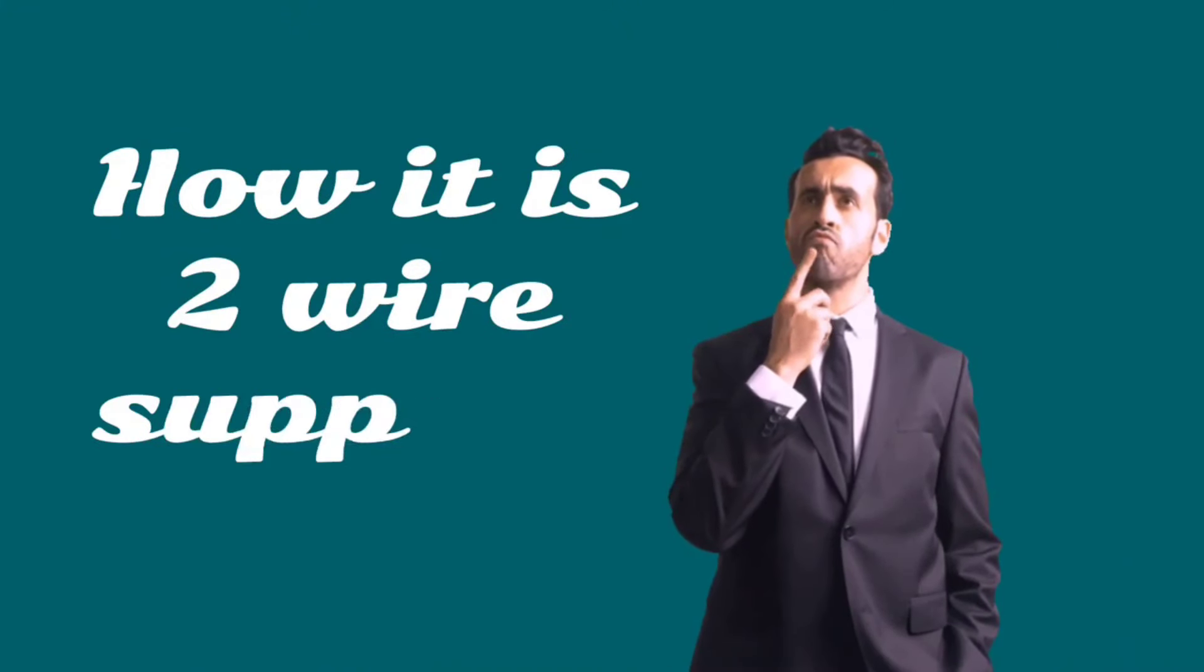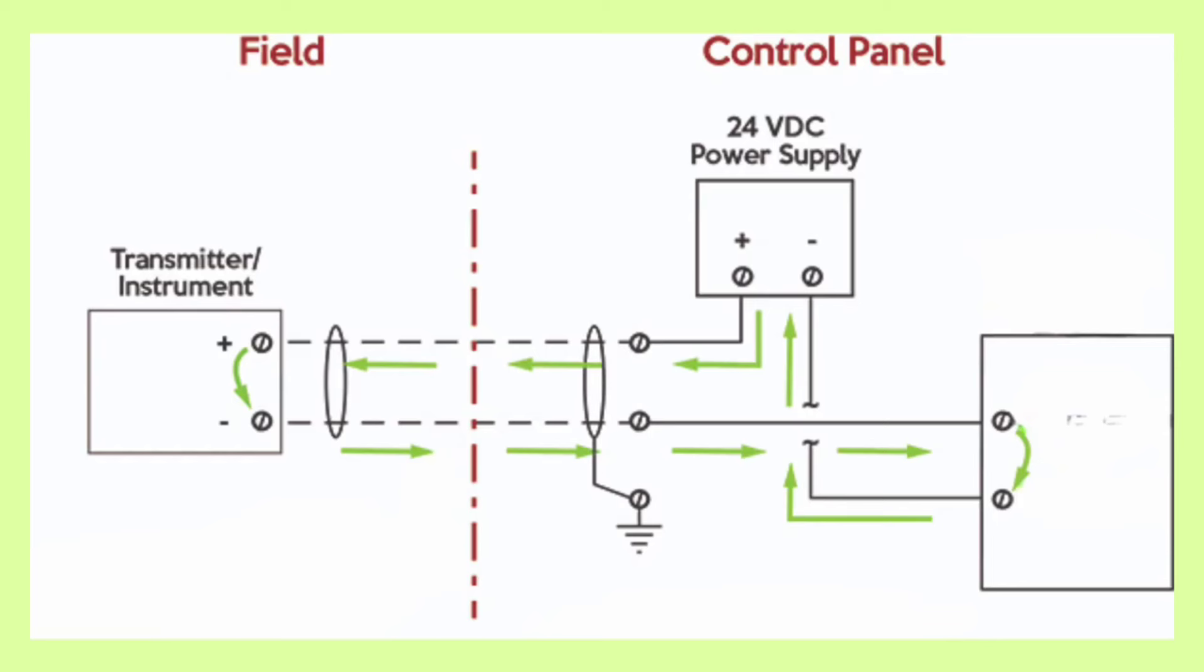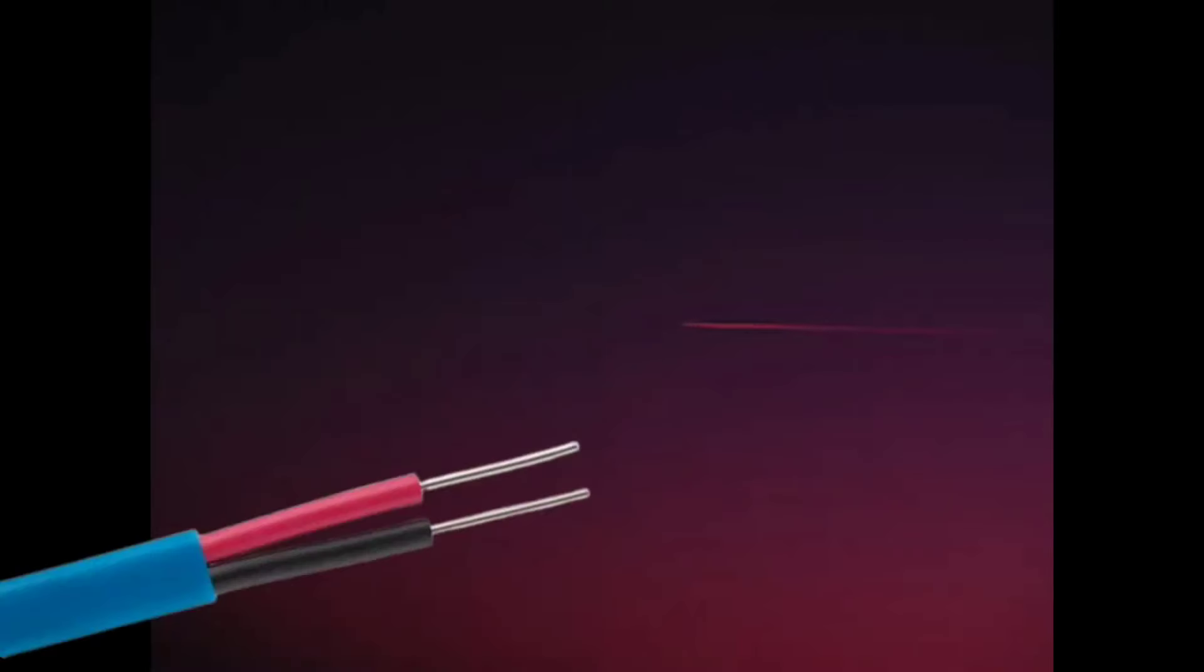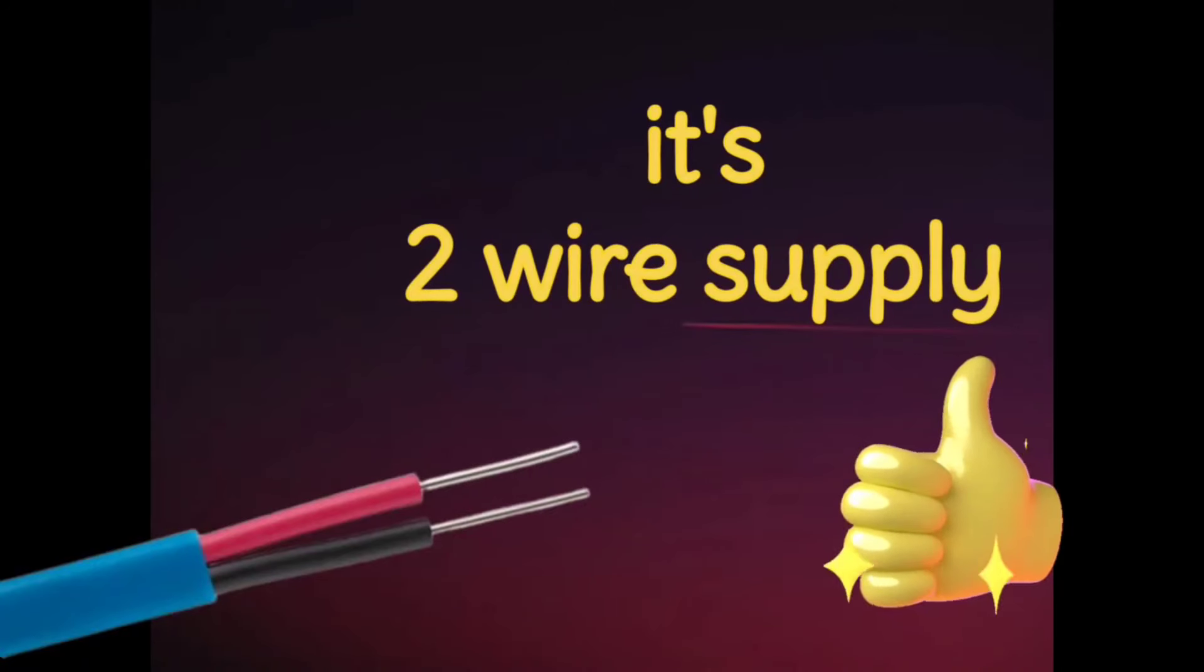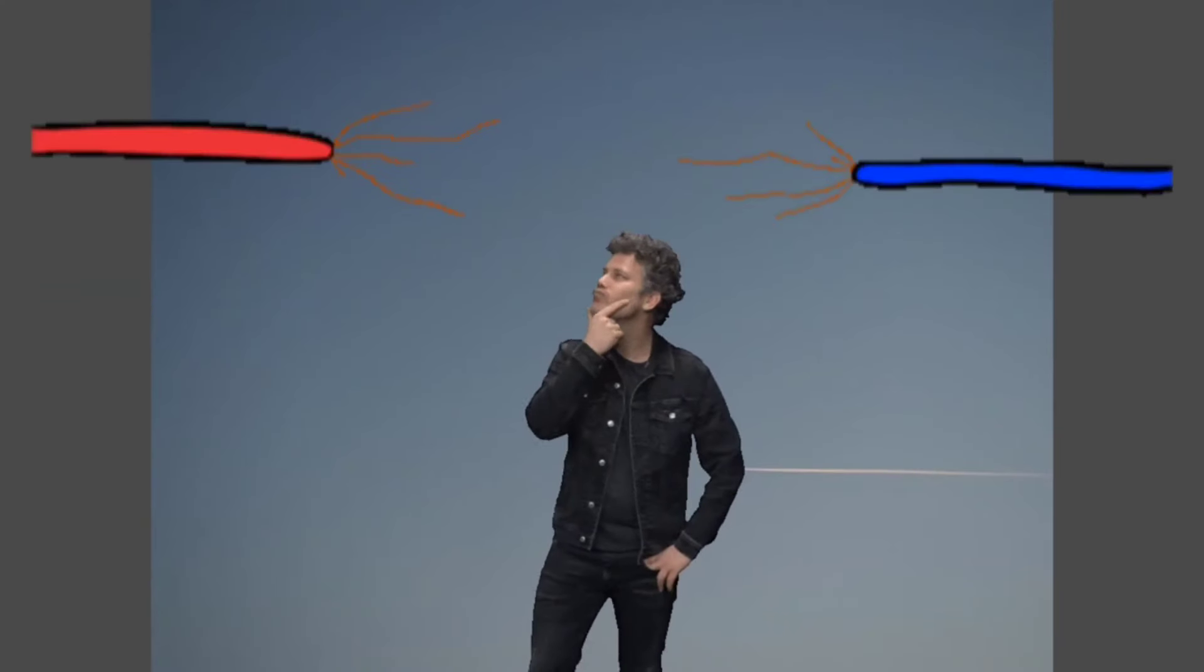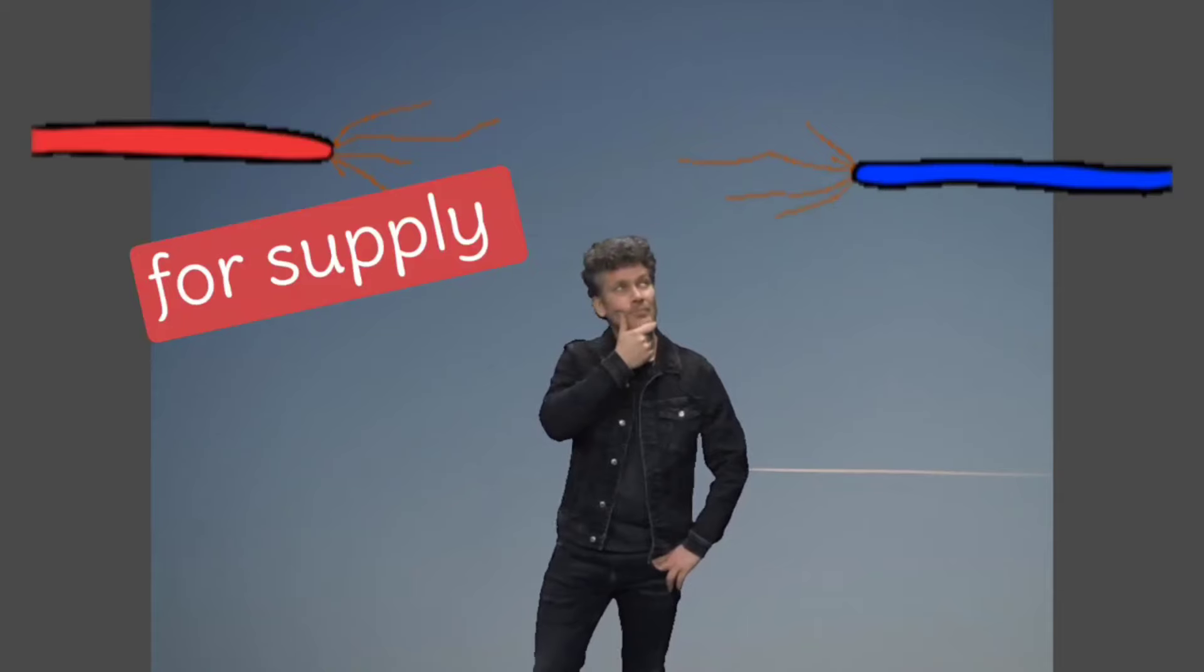Friends, first let us understand how it is 2-wire supply. Here you can see in the image, this is first wire and the second wire. So this becomes 2-wire supply. By now, it has become clear to you that it's a 2-wire supply. But it is also very important for you to know which wire is for supply and which wire is for signal. For this, you have to understand.